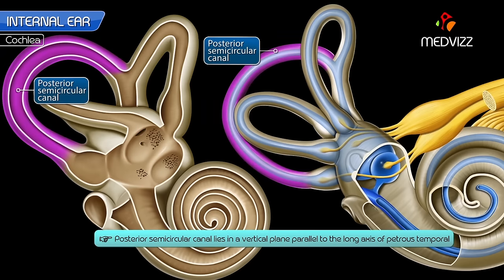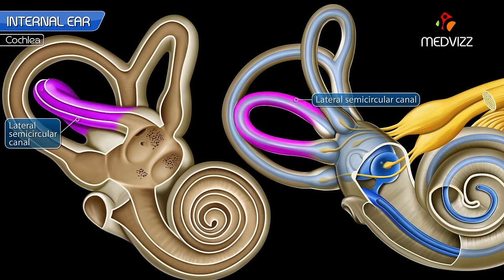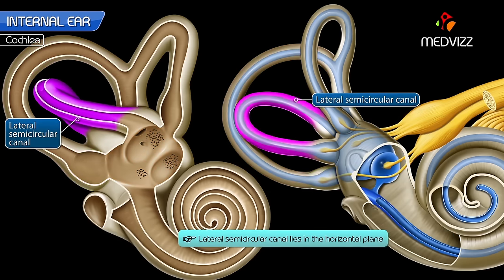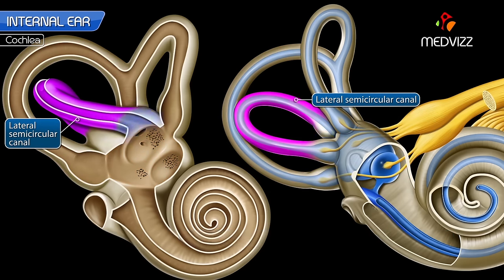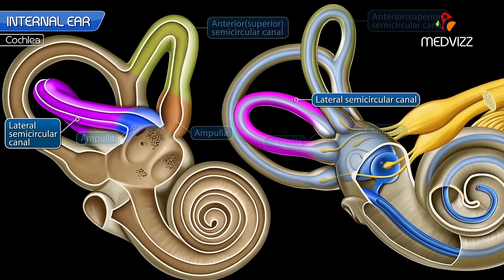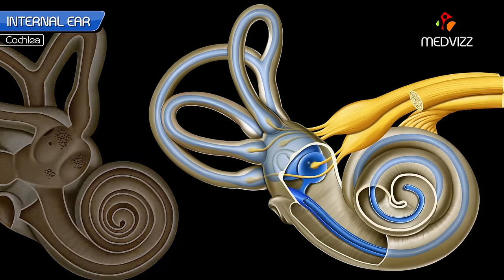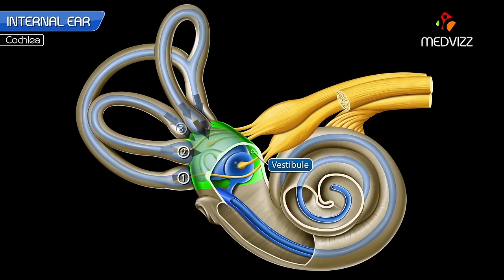The posterior semicircular canal also lies in a vertical plane parallel to the long axis of the petrous temporal. Its lower ampullated end communicates with the vestibule and is innervated separately by a branch of the vestibular nerve. The lateral semicircular canal lies in the horizontal plane. Its anterior lateral end is ampullated and lies close to the ampullated end of the anterior semicircular canal. Both ends of this canal open directly into the vestibule. Thus, the three semicircular canals open into the vestibule by five openings.